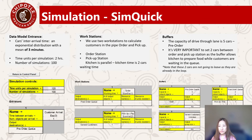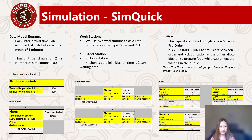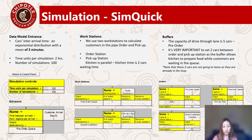We used SimQuick to do scenario simulation. In this slide, you see how we set up the model. The time units per simulation is 120 minutes, which is 2 hours of the rush-hours time, and the number of simulations is 100. We set two working stations to calculate the customers in the pipeline: one is the order station, the other is the pickup station, and the kitchen is parallel.